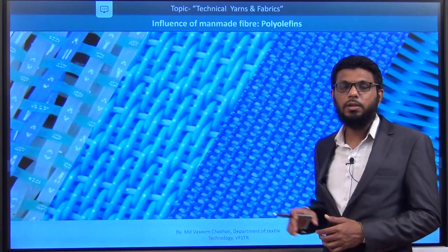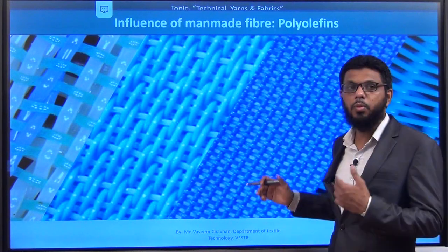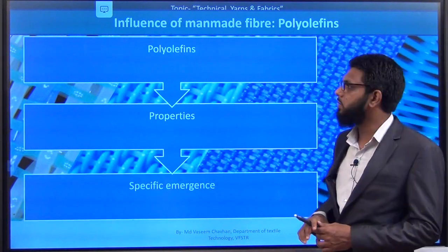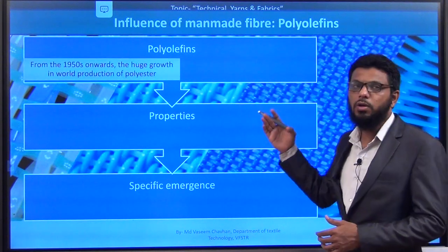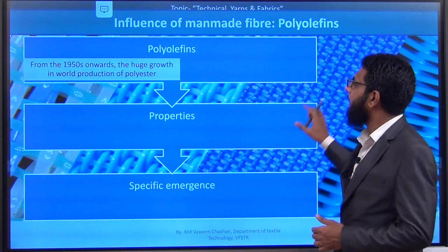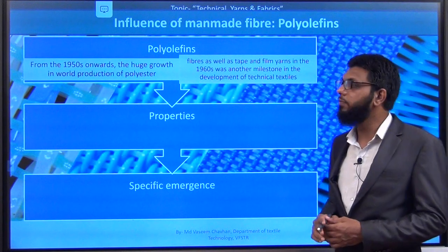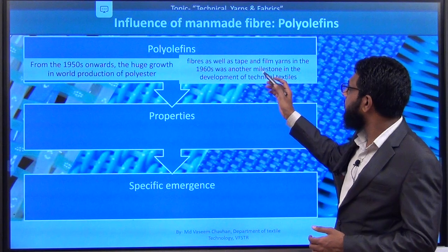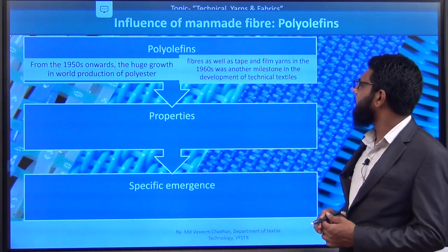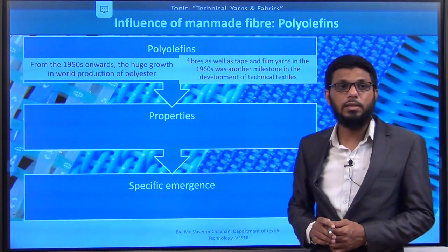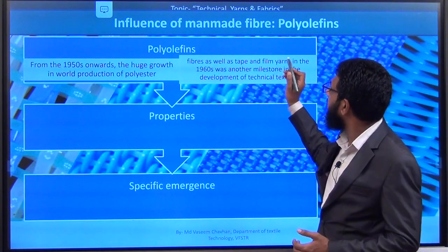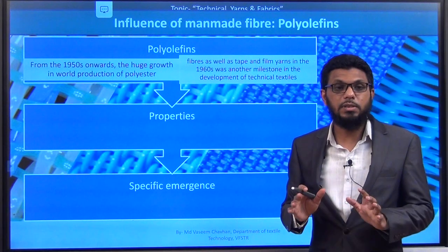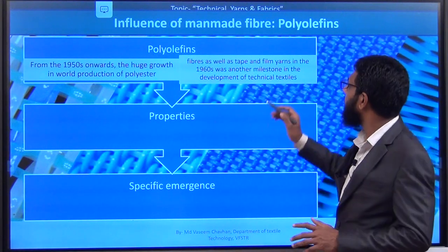The next fiber is the polyolefin fiber, of which polypropylene is the example. This polyolefin fiber got huge growth from the 1960s onwards after the introduction of polyester. Specifically, it was introduced in tape, filament, and fiber form in the 1960s, and that is a main milestone in the development of technical textile. The introduction of polypropylene fiber in the 1960s is a main milestone in the development of technical textiles. At present, there are huge applications in technical textiles where we are using this polypropylene fiber.